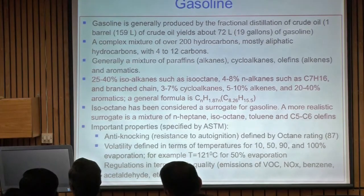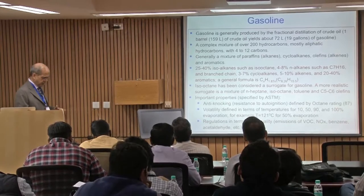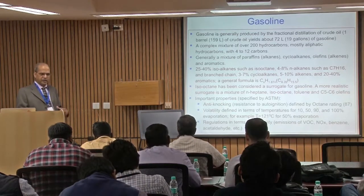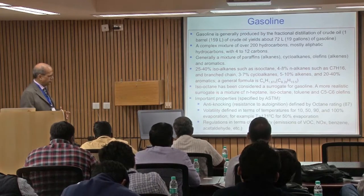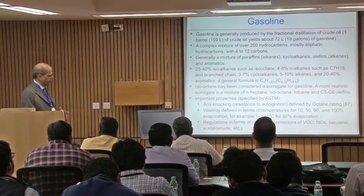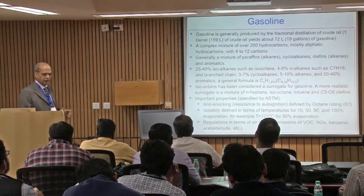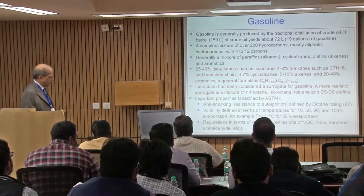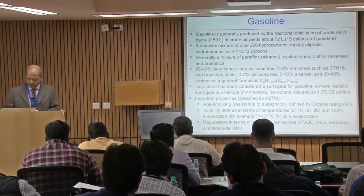The main property for gasoline is the anti-knocking property defined by the octane rating. A mixture of isooctane and heptane is used — if it's 10% heptane and 90% isooctane, the octane rating is 90. For high-performance cars the octane rating can be more than 100. The octane rating reflects the anti-knocking properties of the fuel.